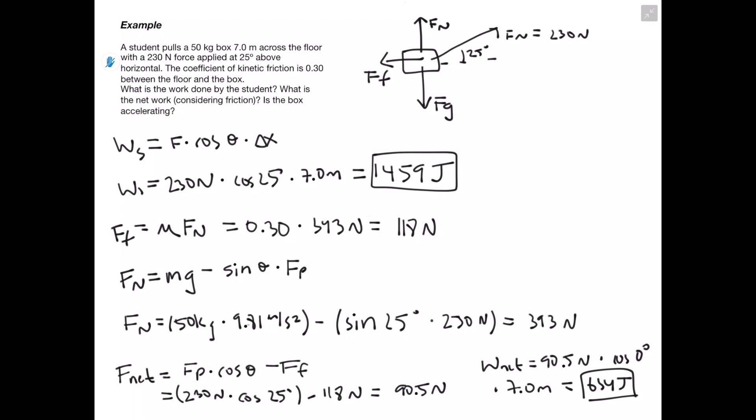Lastly, we're asked whether the box is accelerating. We already answered this when we found our net force of 90.5 newtons. Anytime we have a net force not equal to zero, by definition we must have an acceleration, since net force equals mass times acceleration. A non-zero net force means we do have an acceleration.